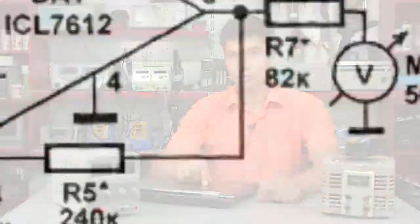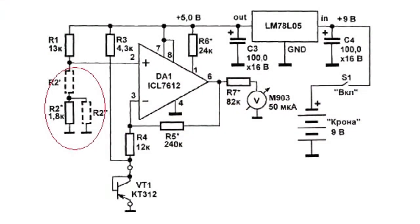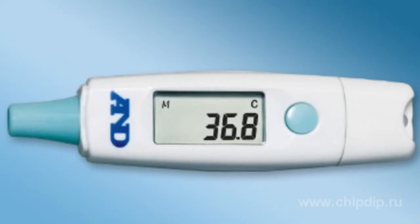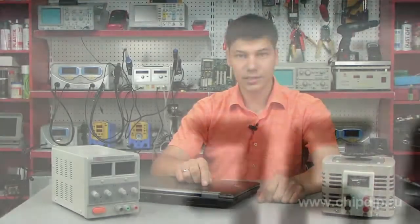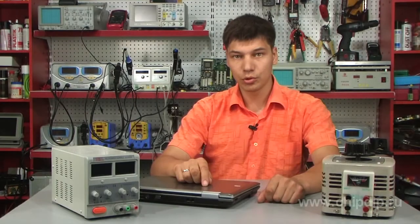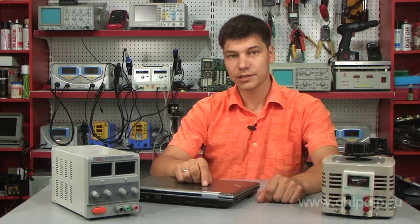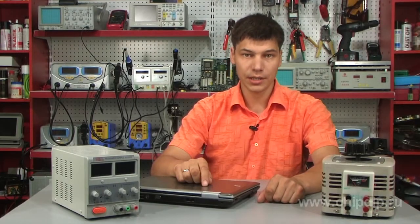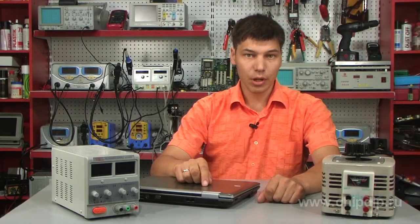Let's change the resistance of R2 resistor in the circuit shown in the figure. In this case, the whole measuring scale shifts over a certain value, so in order to get true measurement values we shall have to add or subtract a certain constant to the acquired value.